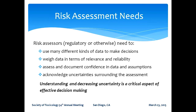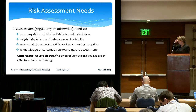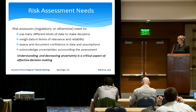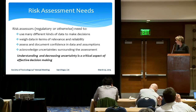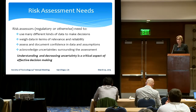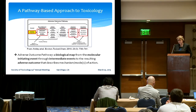What do risk assessors need to do when they make a decision? Generally they have to use many different kinds of information, weigh this information in terms of relevance and reliability, assess and document the confidence they have in this information, as well as the assumptions they make around places where they don't have information. They really need to acknowledge the uncertainties in a given decision. Understanding and decreasing uncertainty is a critical aspect of effective decision-making, and pathway-based approaches can help in many ways.